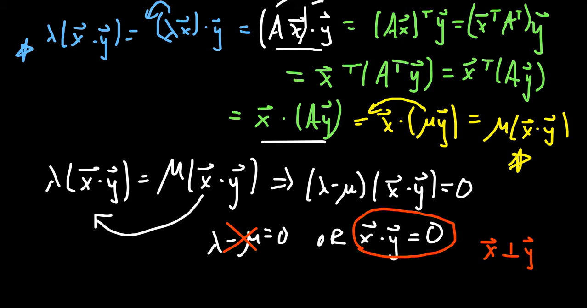This strengthens the result from the previous section that said eigenvectors for different eigenvalues are linearly independent — because orthogonal vectors form a linearly independent set, and orthogonality is a stronger condition than linear independence. So this is just the tip of the iceberg when it comes to symmetric matrices and their eigenvectors and eigenvalues.